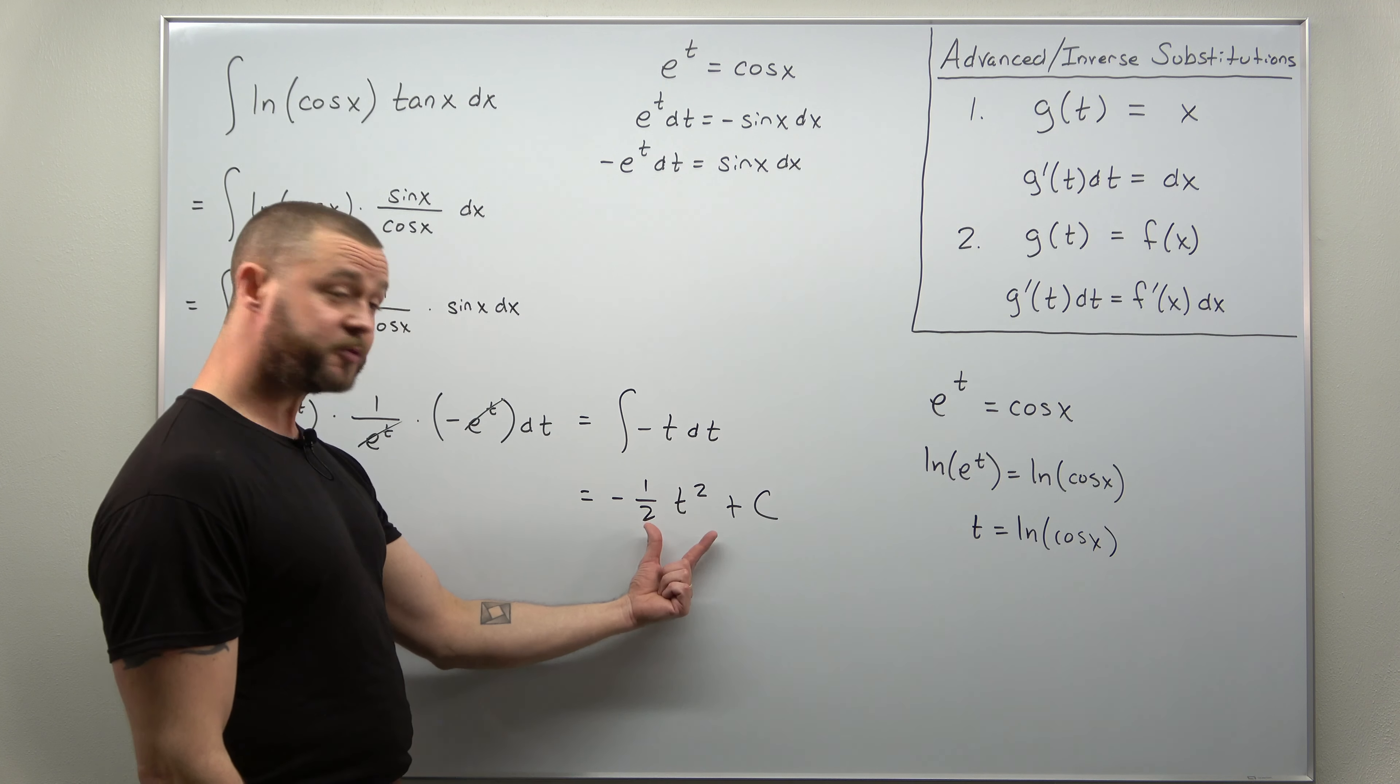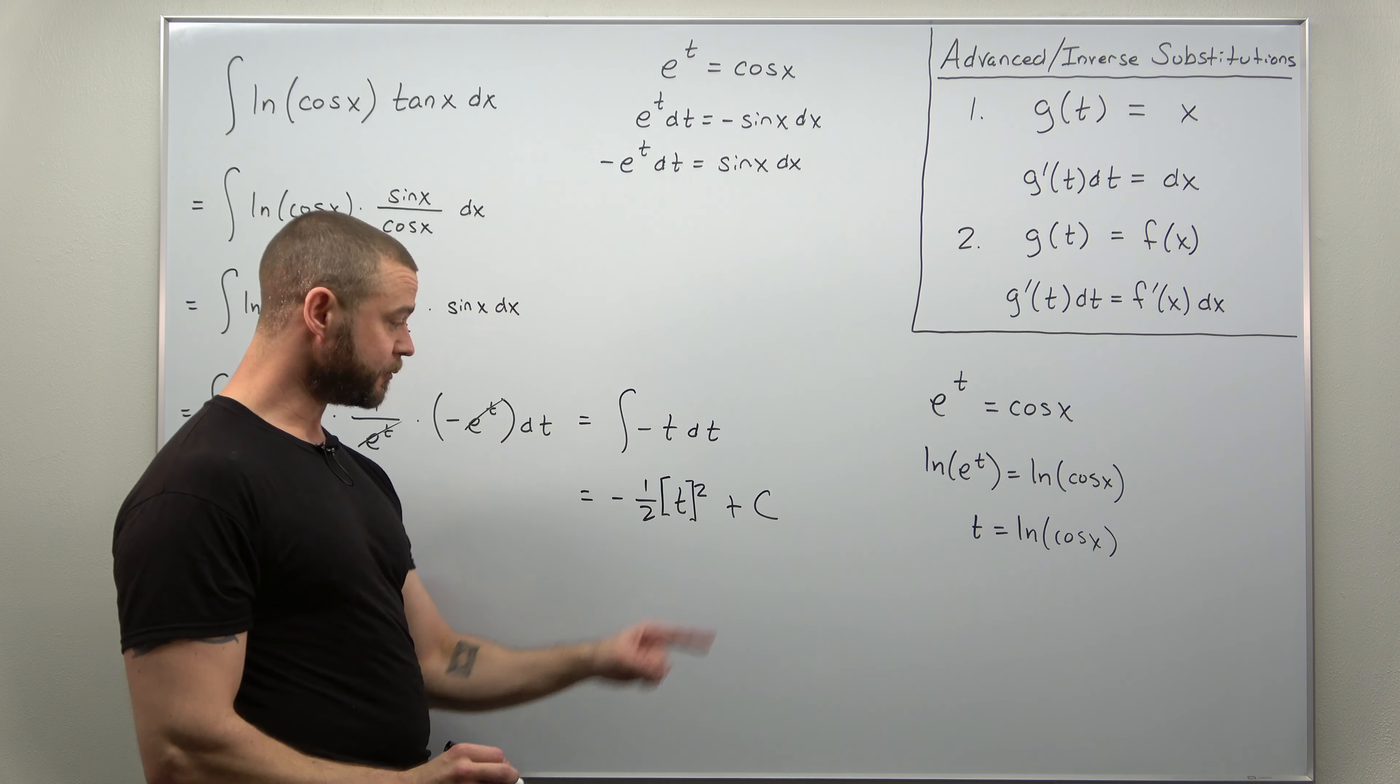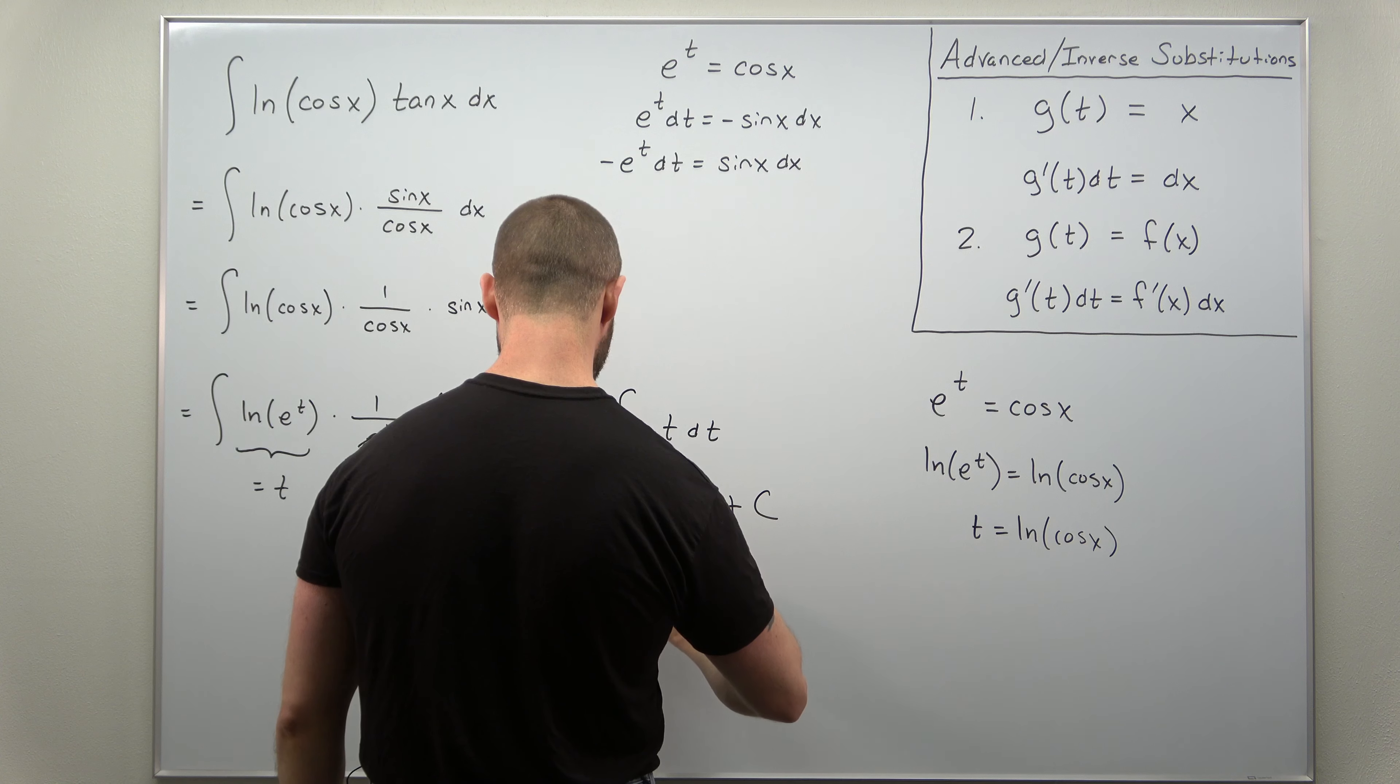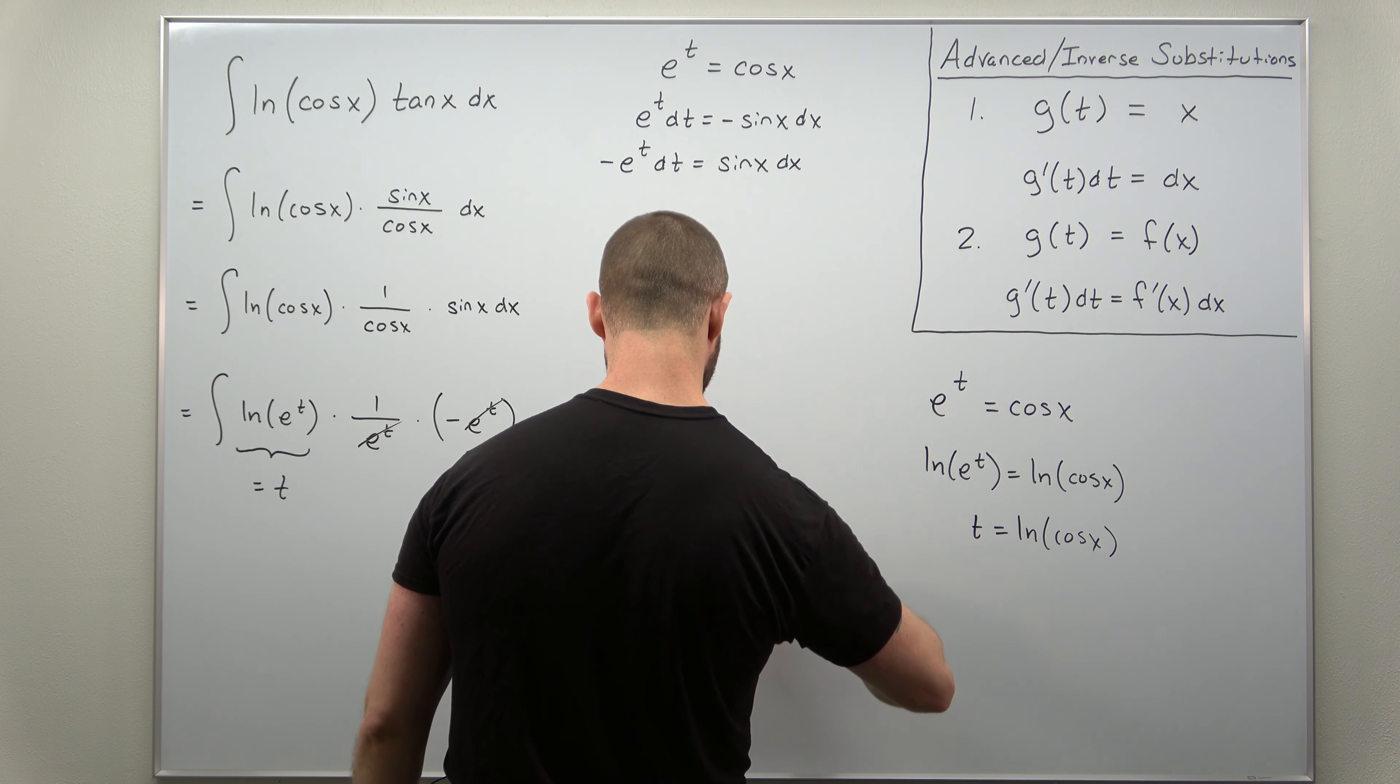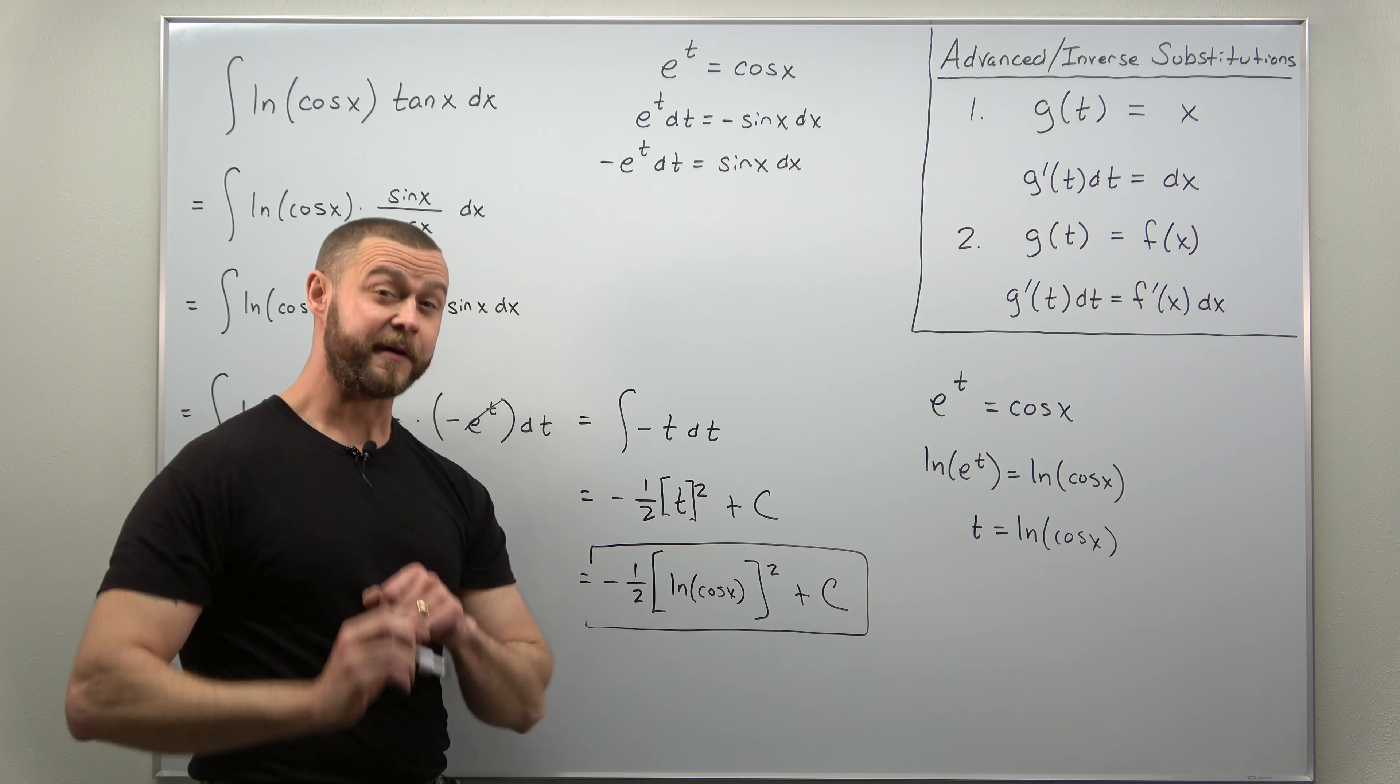So just be careful and use parentheses there. Maybe think of using a set of parentheses or brackets there. So if you go ahead and replace t with natural log of cosine of x, we should get our antiderivative as negative one half and then times natural log of cosine of x all squared. And don't forget the plus c. And there we go.